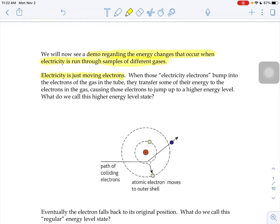When those electricity electrons bump into the electrons of the gas in the tube, they transfer some of their energy to the electrons in the gas. This causes the electrons to jump up to what we call a higher energy level. This higher energy level state is called the excited state.